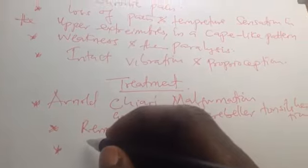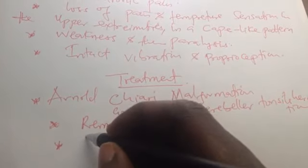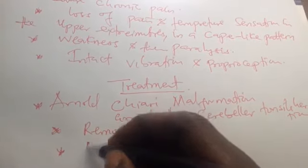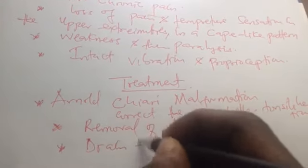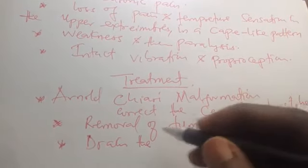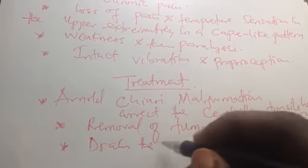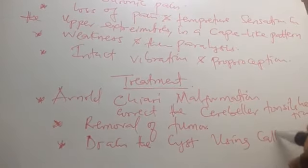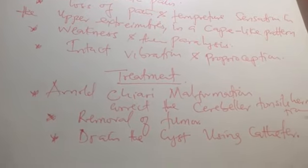Once surgeons approach the syrinx, they perform shunting in the patient. What they do is drain the fluid - the cyst that's collected in the spinal cord - using a catheter.